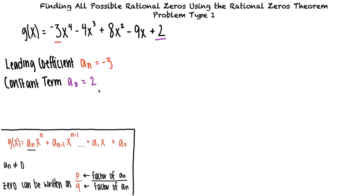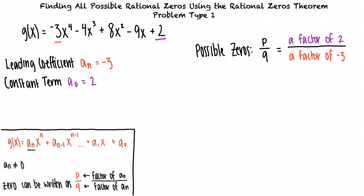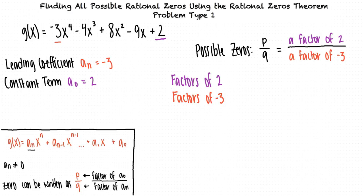Since we identified a sub 0 as 2 and a sub n as negative 3, any rational zero of g of x must have the form: a factor of 2 divided by a factor of negative 3. The possible values of p are factors of 2, which are positive or negative 1 and positive or negative 2. The possible values of q are factors of negative 3, which are positive or negative 1 and positive or negative 3.